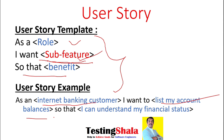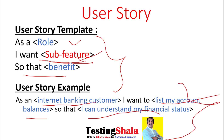The benefit the customer gets is that they can understand the overall financial status of their account. This is how the user story would look like for this example. Now I will write the acceptance criteria for this same user story.